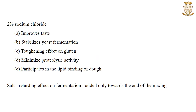About 2% sodium chloride is usually added during bread making for the following purposes: it improves taste, it stabilizes yeast fermentation, it acts as a toughening effect on the gluten, it helps to minimize proteolytic activities, and it participates in the lipid binding of the dough. Since salt has a retarding effect on fermentation, it is added only towards the end of the mixing.